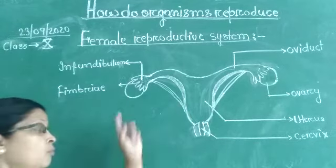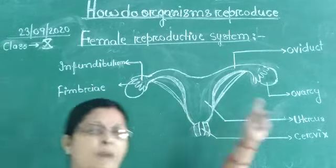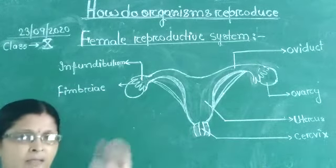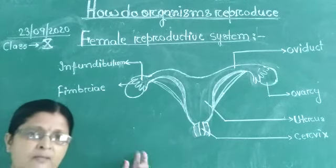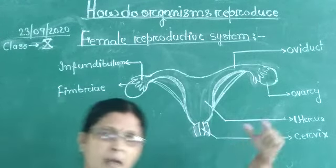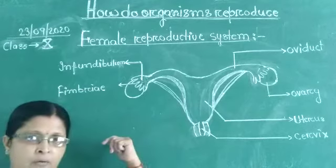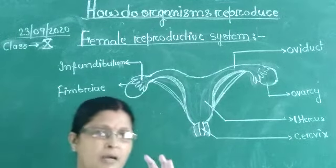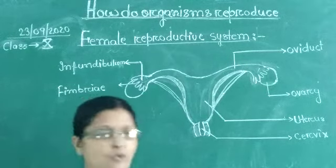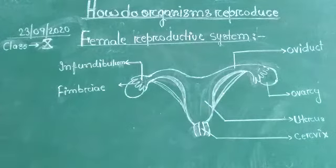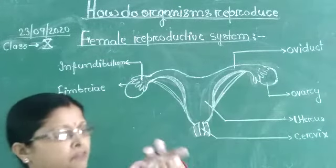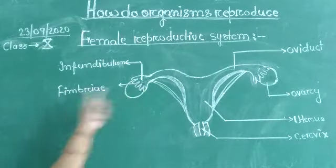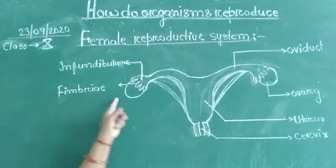One pair of ovaries — one toward the left side, another toward the right side. Both are situated, one on the left and another on the right. It is shaped just like an almond. It is overlapped by finger-like projections.